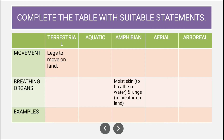Next we have to complete a table with suitable statements. The columns are movement, breathing organs, and examples. The rows are terrestrial, aquatic, amphibians, aerial, and arboreal. Some information is already given — for terrestrial animals, legs to move on land is provided. The remaining part: breathing organ is lungs and examples are human and tiger.